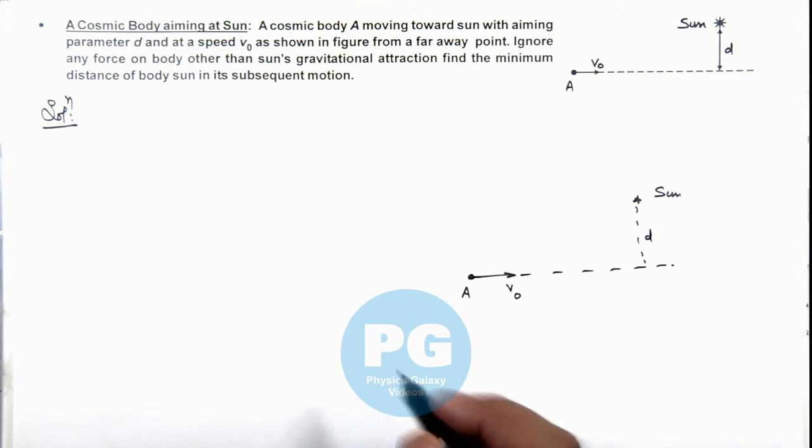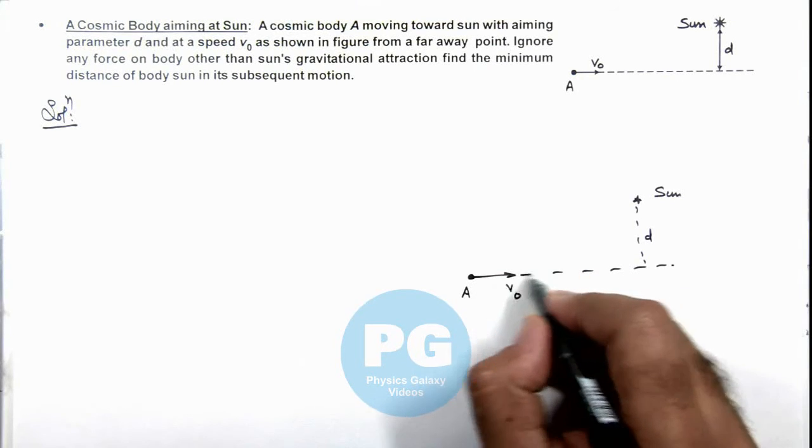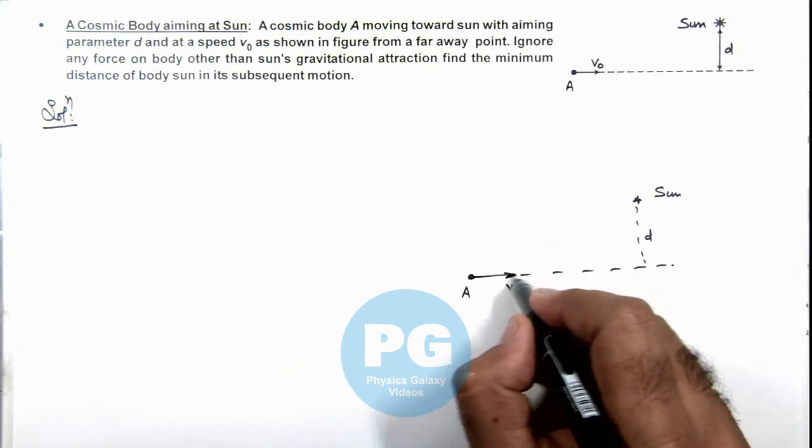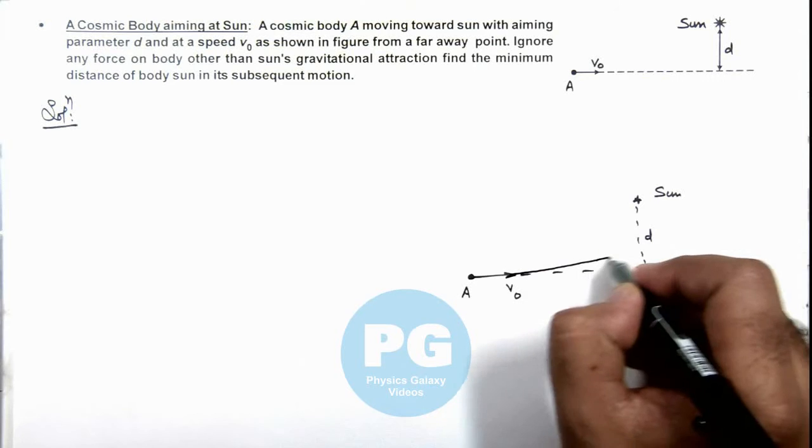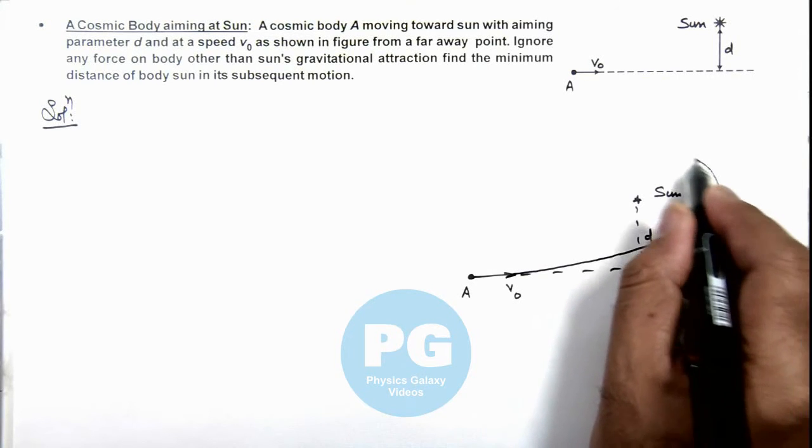So if we just analyze, as the body approaches sun due to attraction its velocity deviates and finally it moves in this manner.